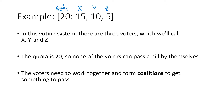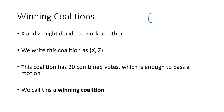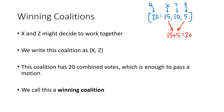Because the quota is 20, none of these voters have enough votes to pass anything by themselves. They've got to work together and form what we call coalitions — a group of voters that all vote the same way. For example, X and Z might work together. Together X and Z have 15 plus 5, which is 20 votes. Because that meets or exceeds the quota, if X and Z both vote yes, the motion will pass. We call that a winning coalition.